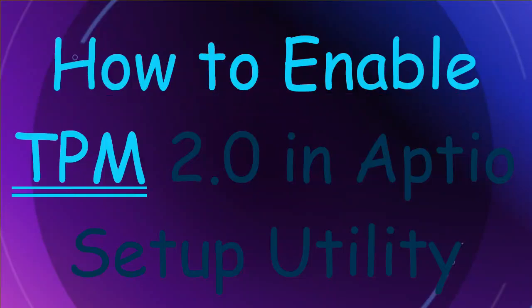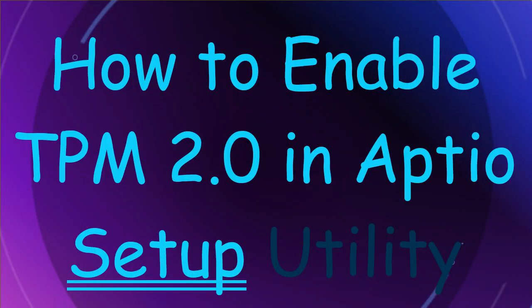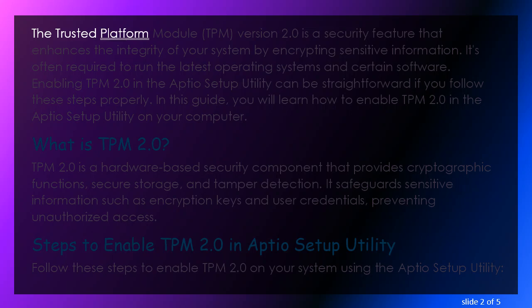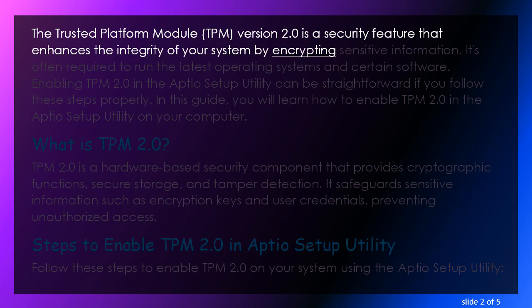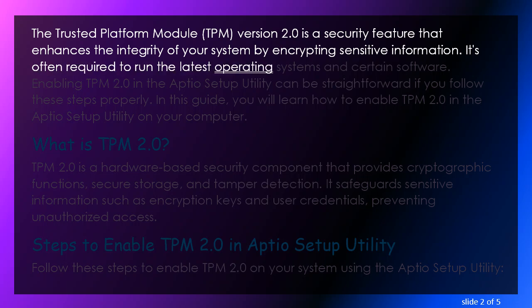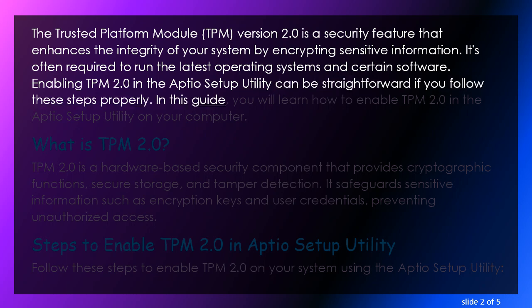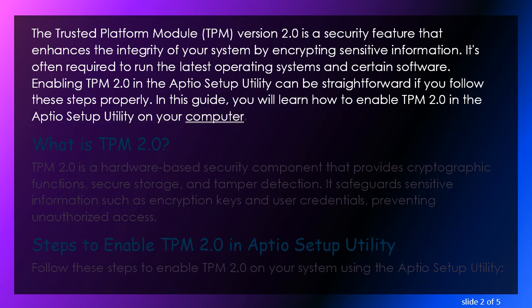How to Enable TPM 2.0 in Aptio Setup Utility. The Trusted Platform Module, TPM, version 2.0 is a security feature that enhances the integrity of your system by encrypting sensitive information. It's often required to run the latest operating systems and certain software. In this guide, you will learn how to enable TPM 2.0 in the Aptio Setup Utility on your computer.